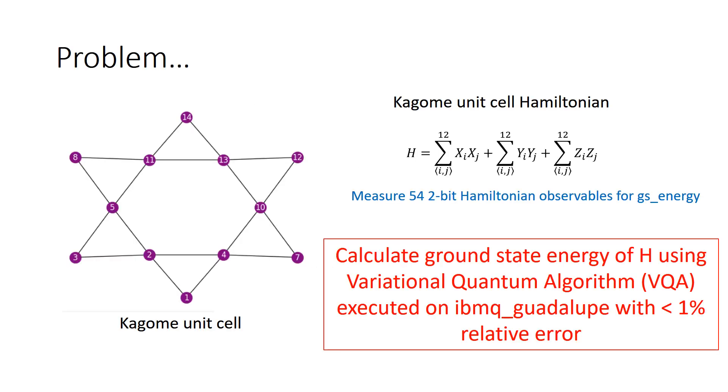A 12-site lattice Kagome unit cell has 54 Hamiltonian terms which should be measured on a state preparation circuit, such that the average value of those 54 observables should be within 1% of the actual ground state energy, that's minus 18.